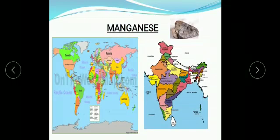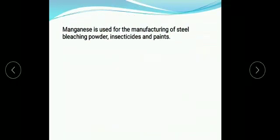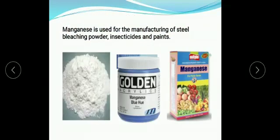Manganese. South Africa is the world's largest producer of manganese. Odisha, Madhya Pradesh, and Karnataka are the major producers in India. It is used for the manufacturing of steel, bleaching powder, paints, and insecticides.